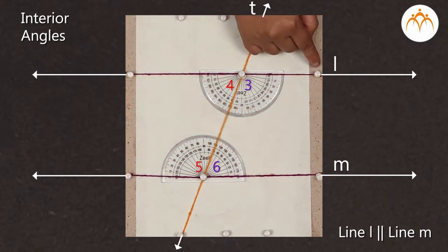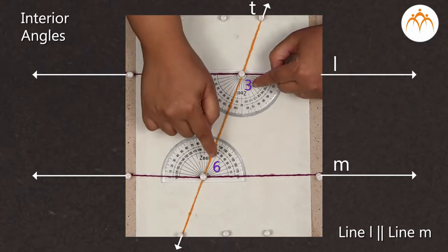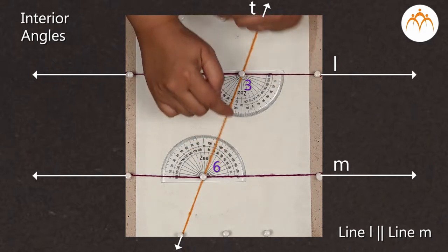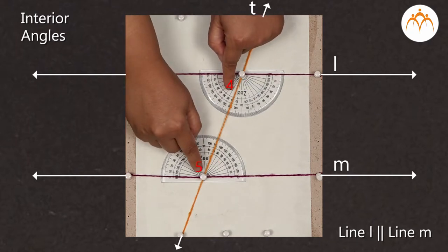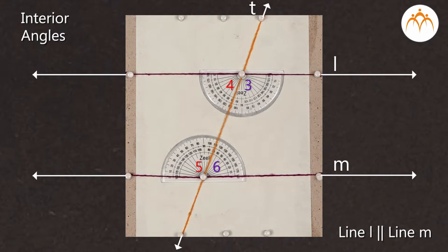These interior angles are formed between line L and line M. Out of these four angles, we can form two pairs: the first pair of angle 3 and angle 6, and the second pair of angle 4 and angle 5. These are called pairs of interior angles.